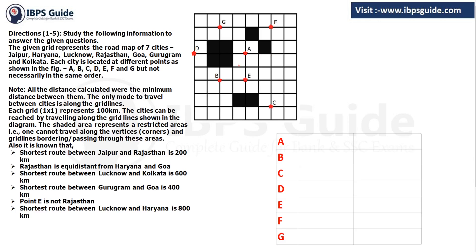If you have to travel from A to B, you must travel along the grid lines — go across, then up. If you want to move to C, take the shortest path along the grid. Each grid square is 100 by 100, so if you travel from A to B across four grid lines, you will travel a distance of 100 plus 100 plus 100 plus 100, that is 400 kilometers.